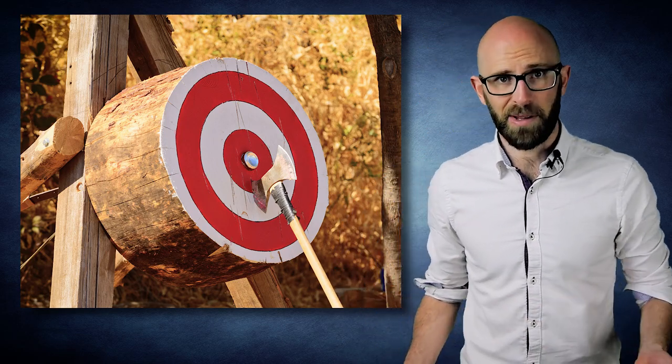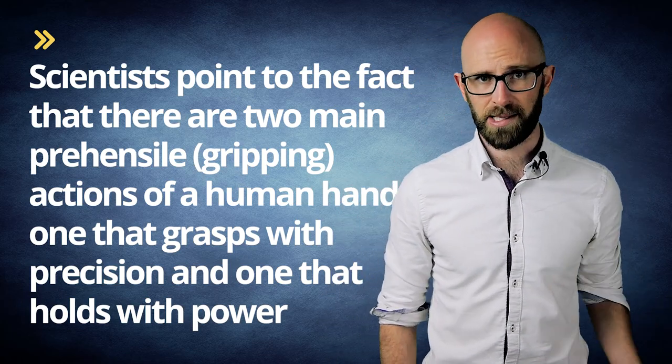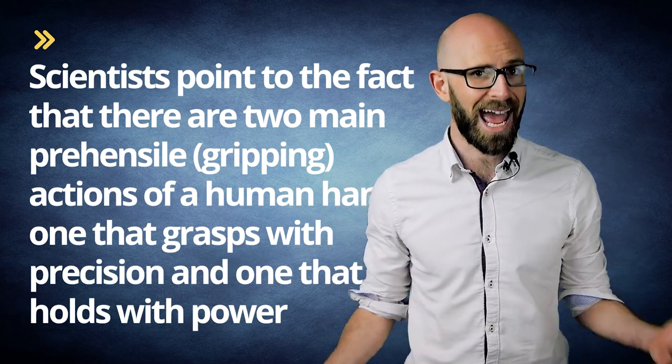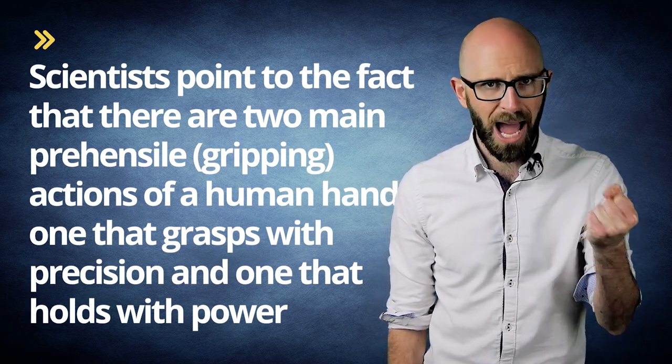Another similar theory holds that our hands evolved thanks to the advantages this provides in accurately throwing and clubbing things. In support of this hypothesis, scientists point to the fact that there are two main prehensile gripping actions of a human hand, one that grasps with precision and one that holds with power.